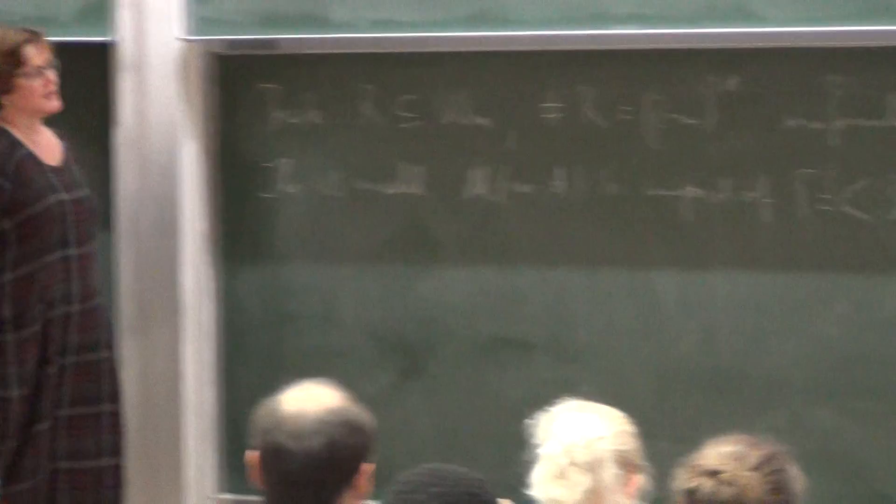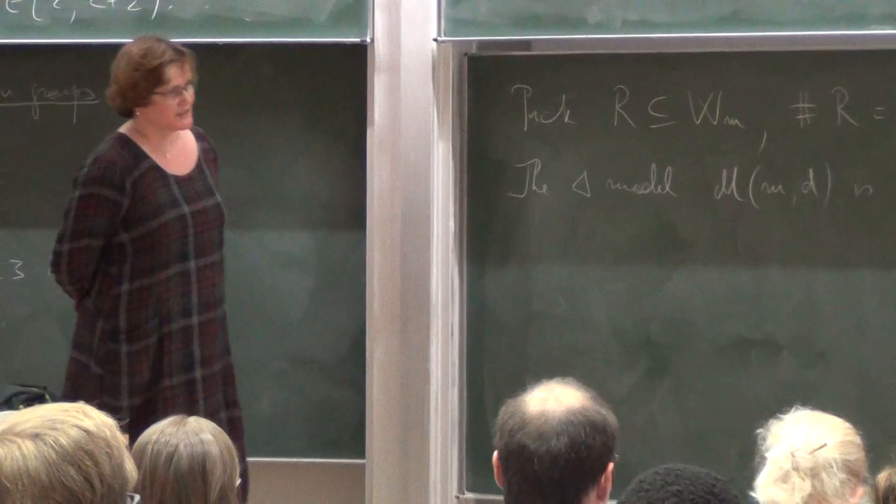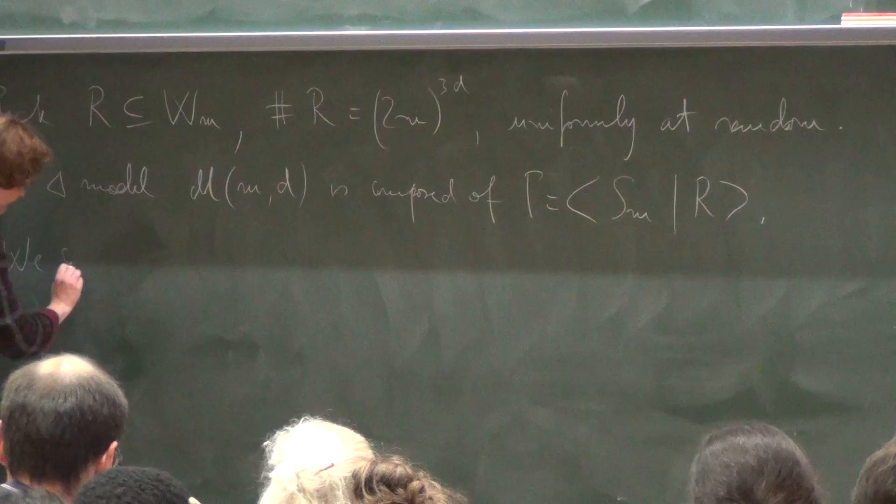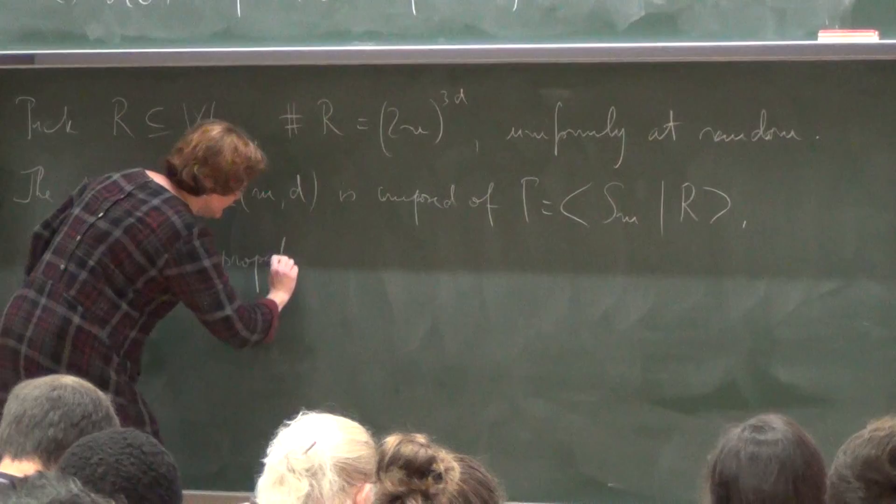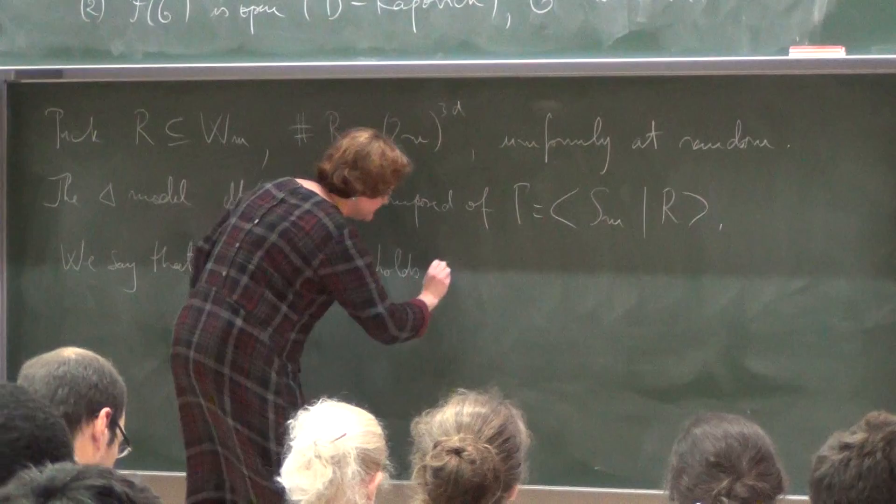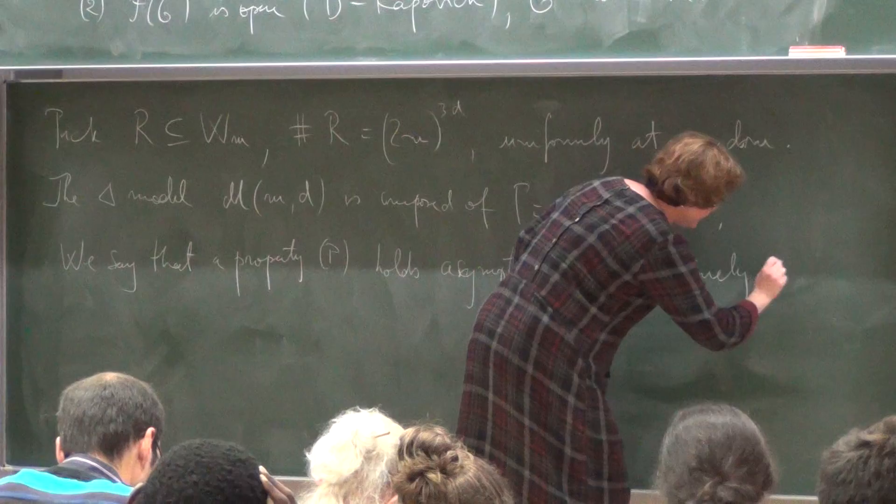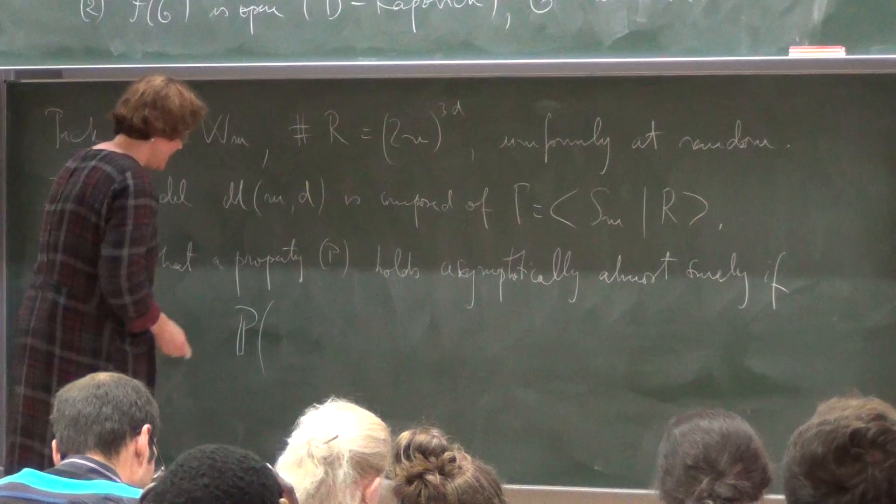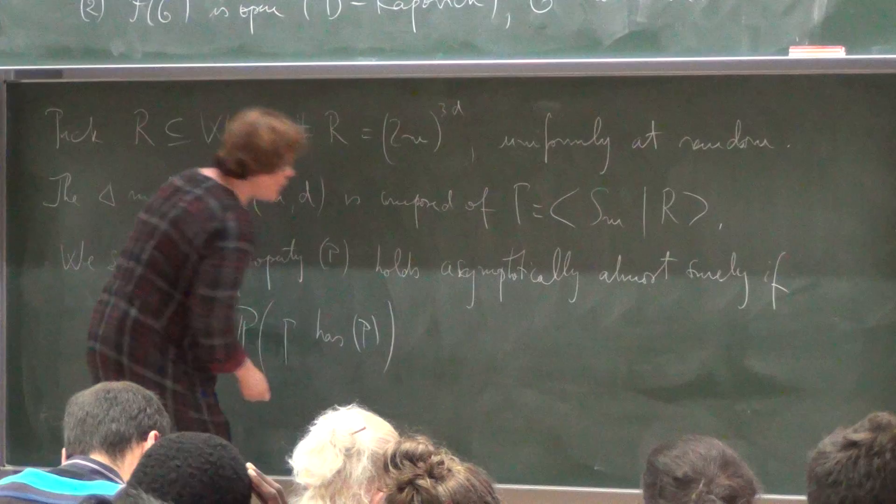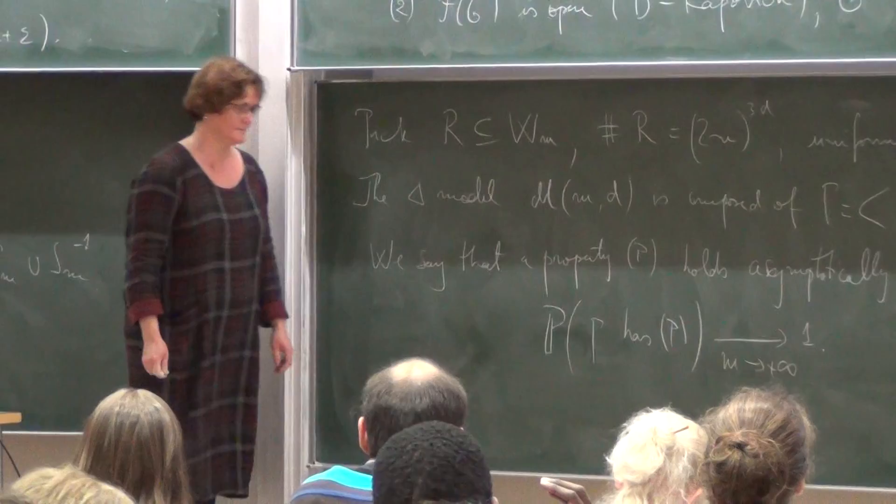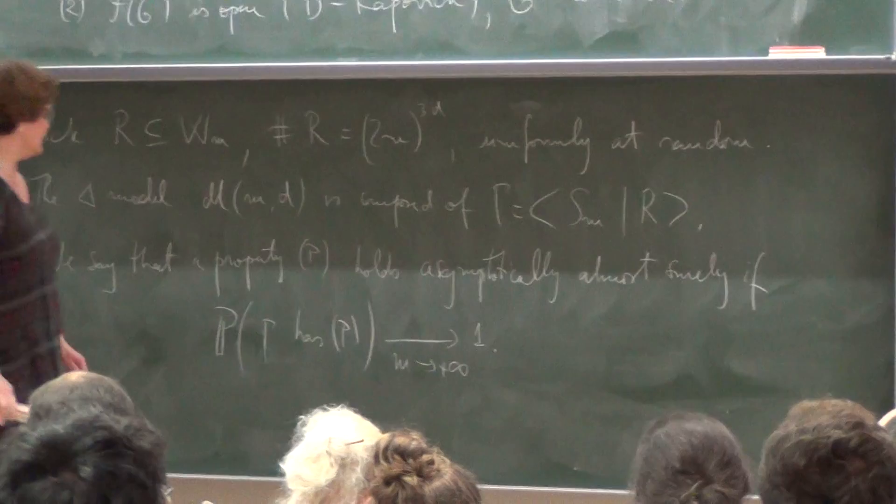So in this model, what we do is that we pick a subset in this set of cardinality 2M power 3D, uniformly at random. So all the subsets of this cardinality appear with equal probability. And then the model, the triangular model, sometimes denoted by M and D, is composed of groups with the presentation, set of generators S_M and set of relators R.